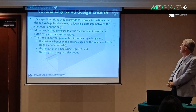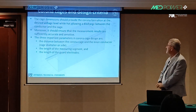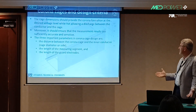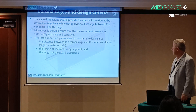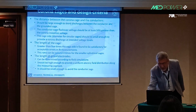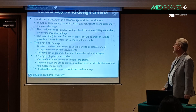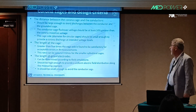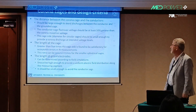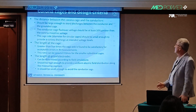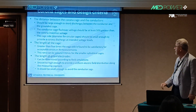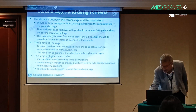Three important parameters in corona cage design are: the distance between the corona cage and the inner conductor, which is the diameter or side of the square; the length of the measuring segment; and the length of the guard electrodes. We started with the distance between the corona cage and the conductors. There were some criteria to design it, which you can find in the paper, along with the length of the guard electrodes.